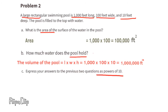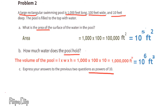Part C: Express your answers to the previous two questions as powers of 10. For Part A, 1,000 times 100 gives 100,000. Well, 1,000 is 10 to the power of 3, times 100 which is 10 to the power of 2. Exponent 3 plus exponent 2 equals exponent 5, so Part A would be 10 to the power of 5 square feet.